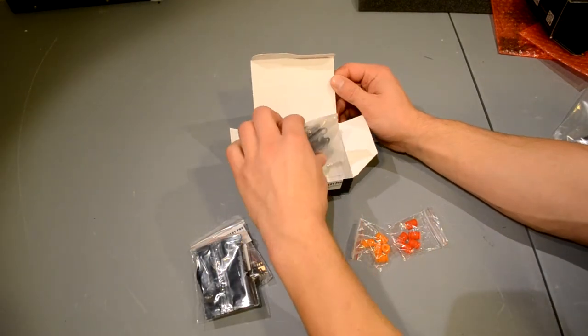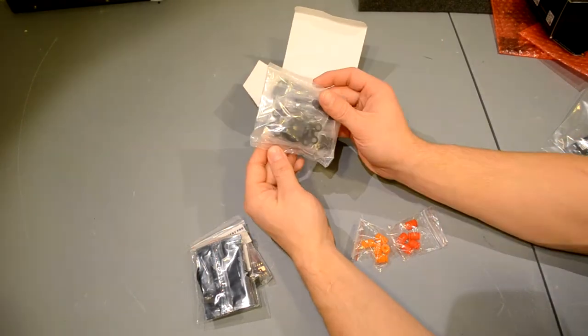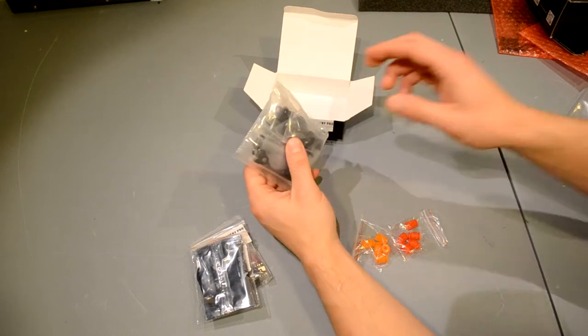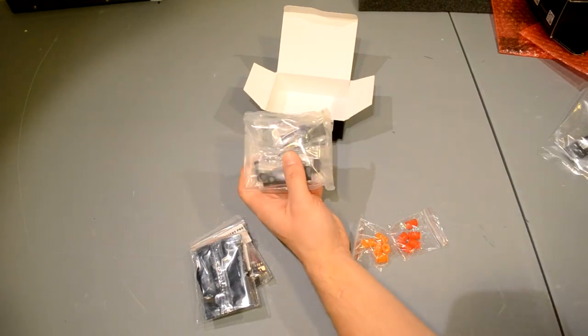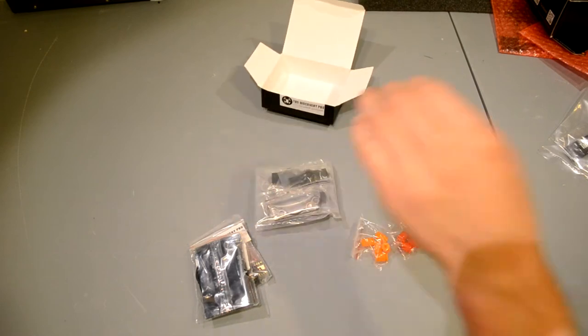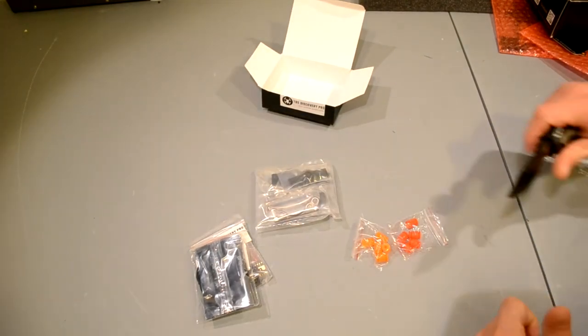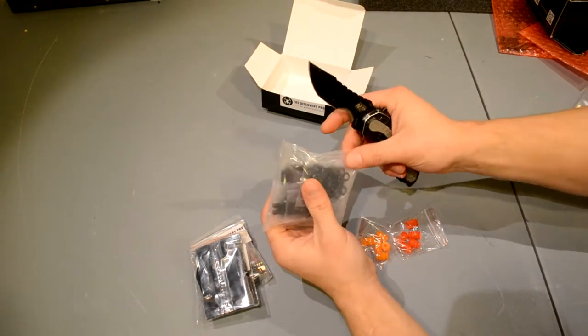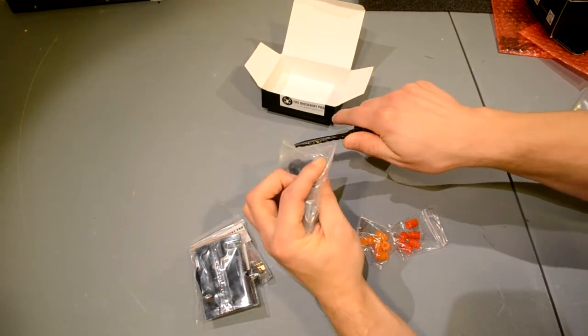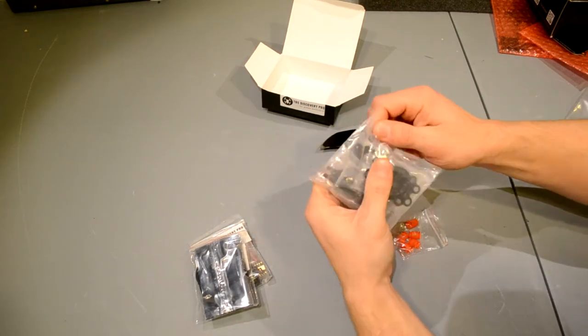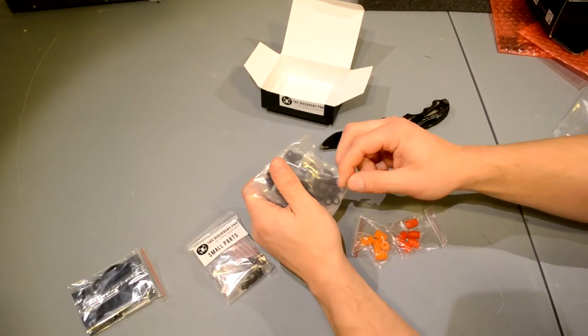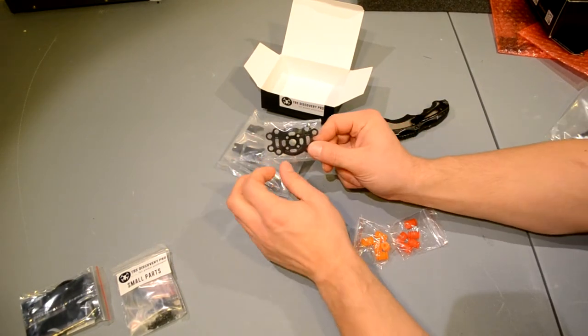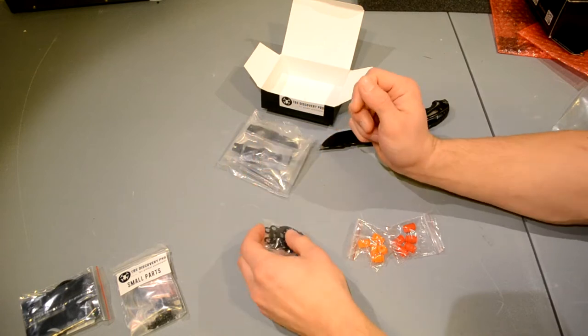Alright, so the first pieces that we need for the vibration dampening frame are going to be this piece and then there should be another piece as well where the dampening balls fit in. Let's see if I can open this without scratching any of the metal. Alright so there's the first piece, now this is going to be where your roll motor mounts.